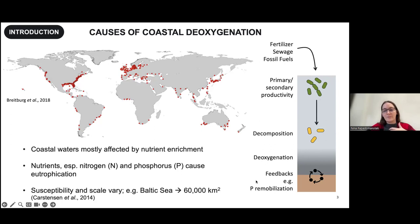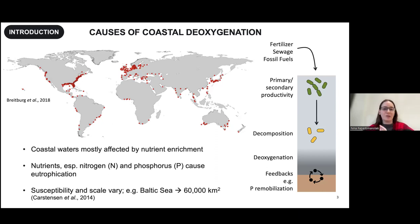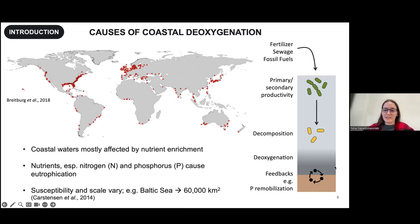These processes create feedbacks. For example, phosphorus is usually buried in sediments, but when oxygen is very low the buried phosphorus can be remobilized and re-enter the water column, fueling even more productivity. Not every part of the coastal ocean is equally susceptible — it also depends on circulation patterns and connection to the open ocean. The Baltic Sea, for instance, has a huge hypoxic area controlled by influx of water from the North Sea, as well as this phosphorus feedback and fertilizer input.